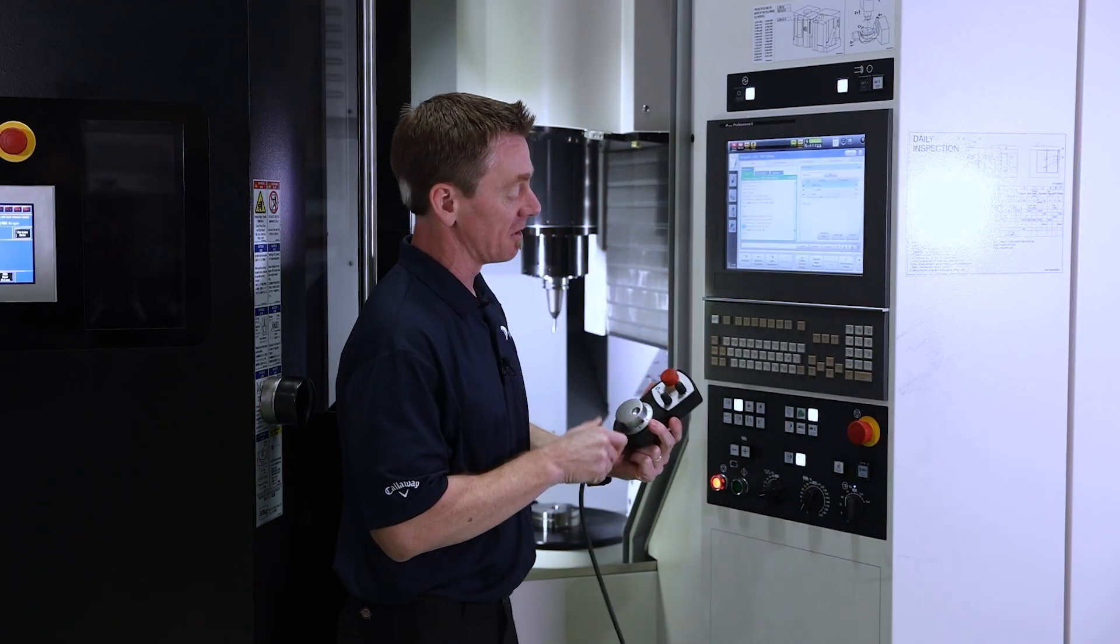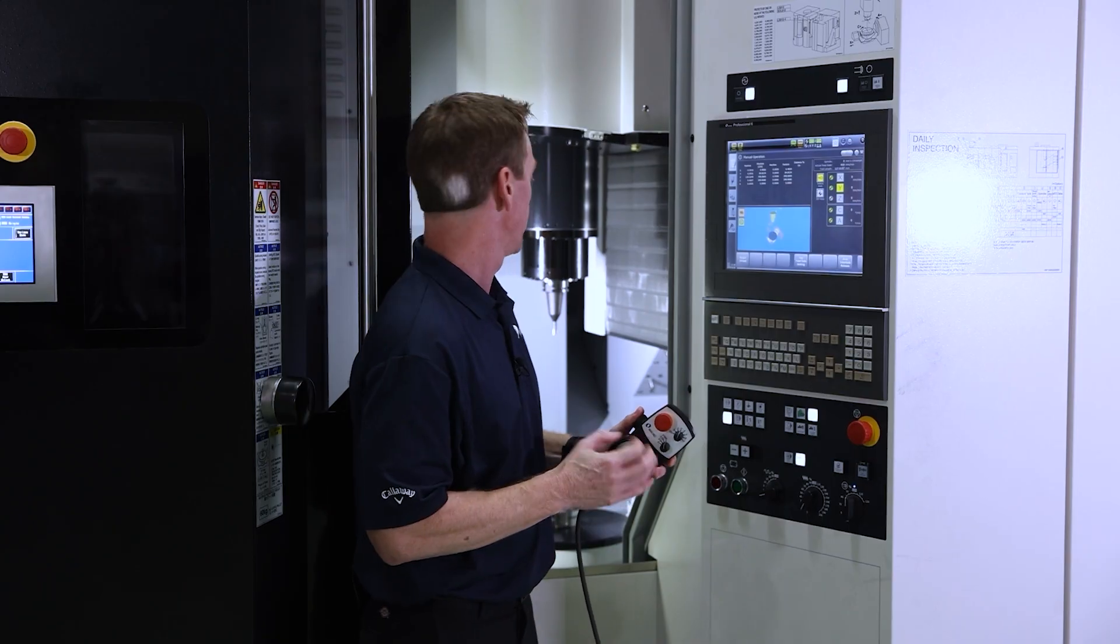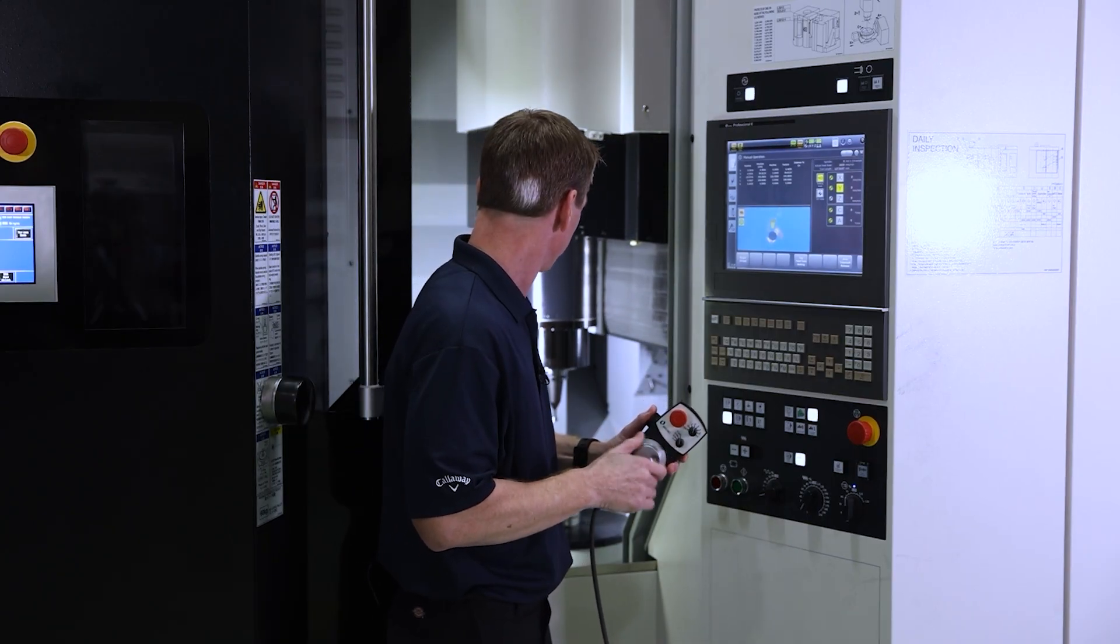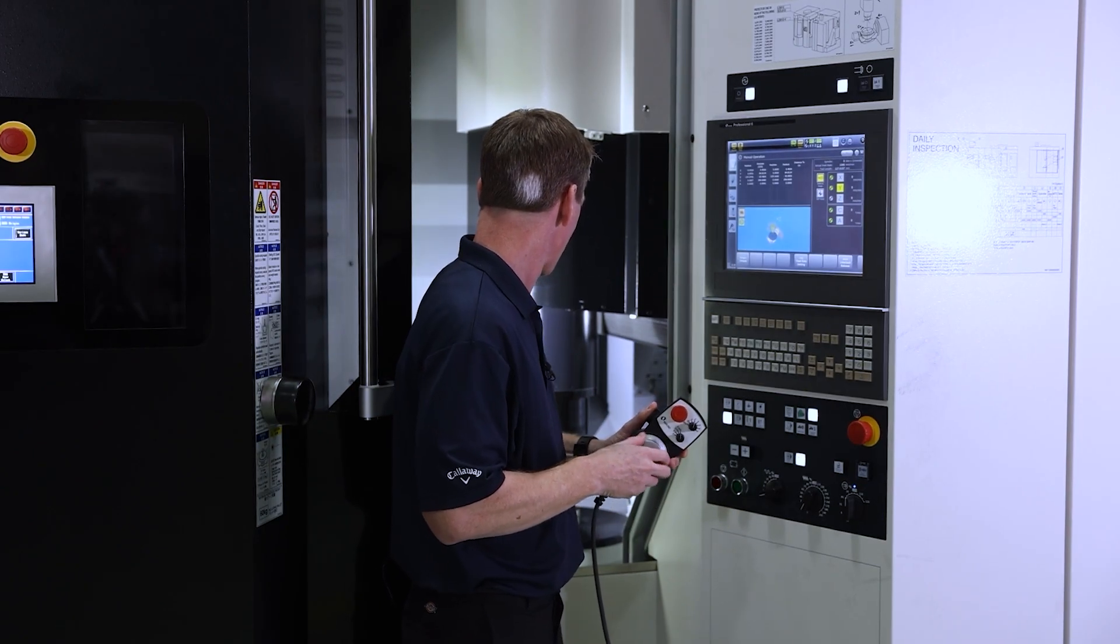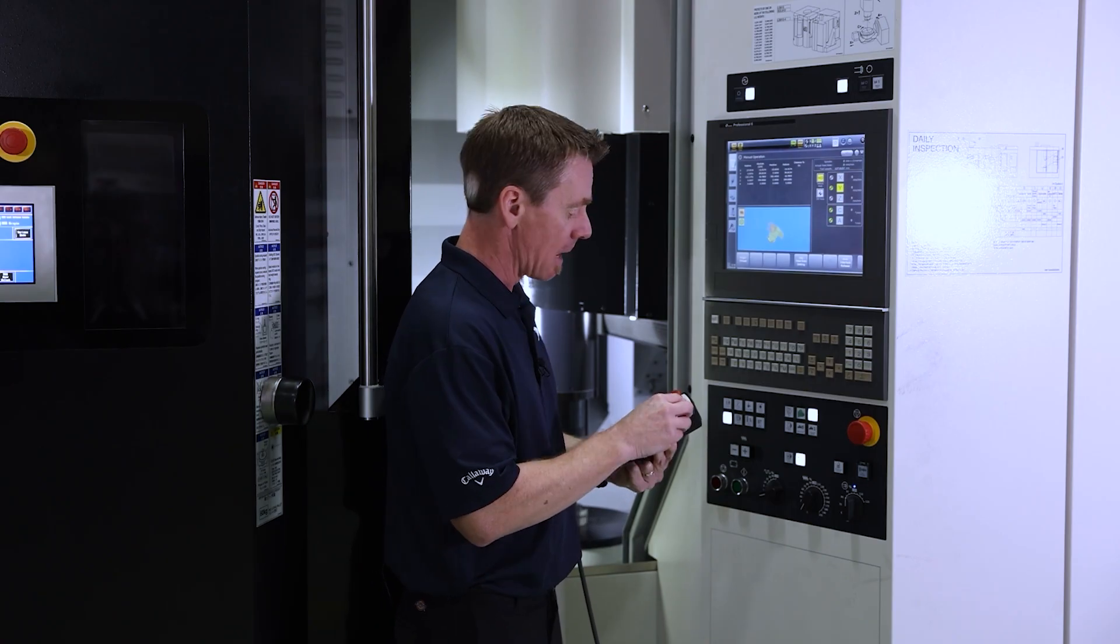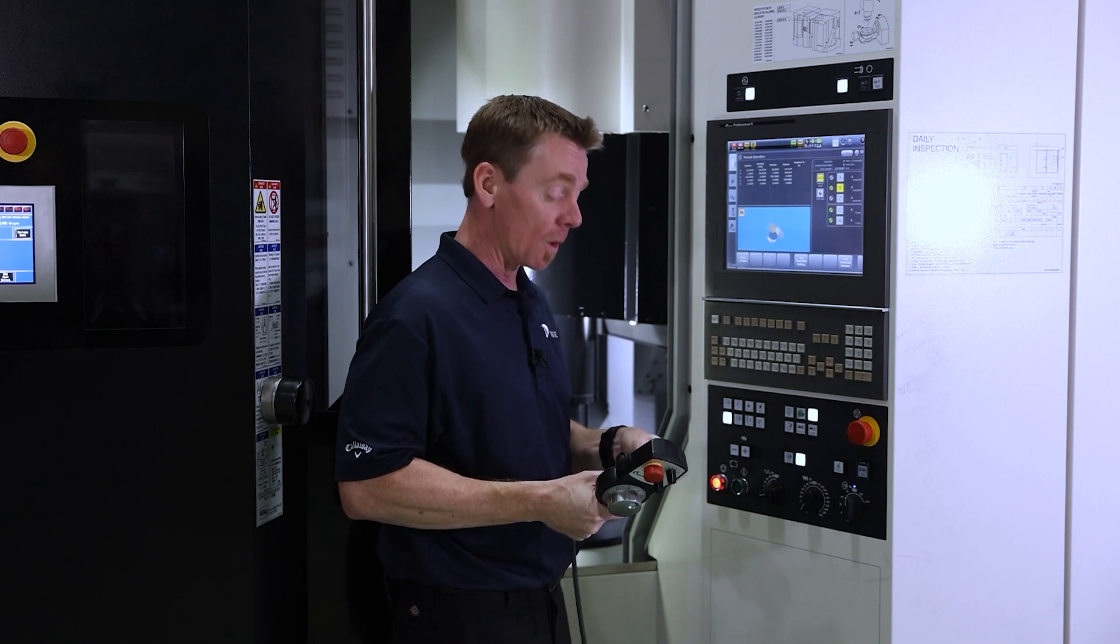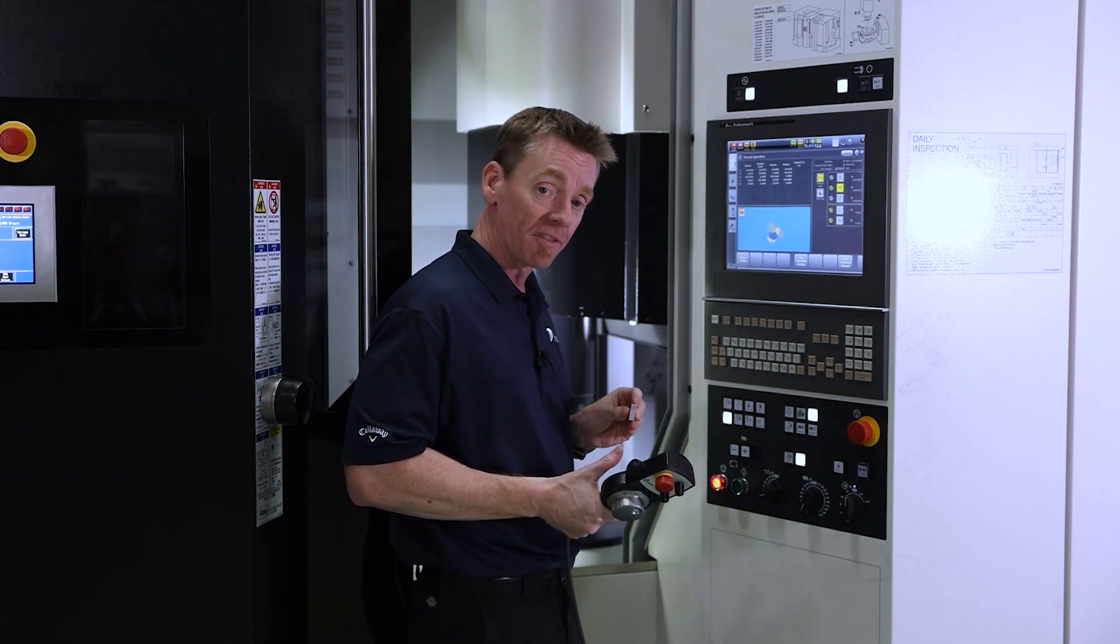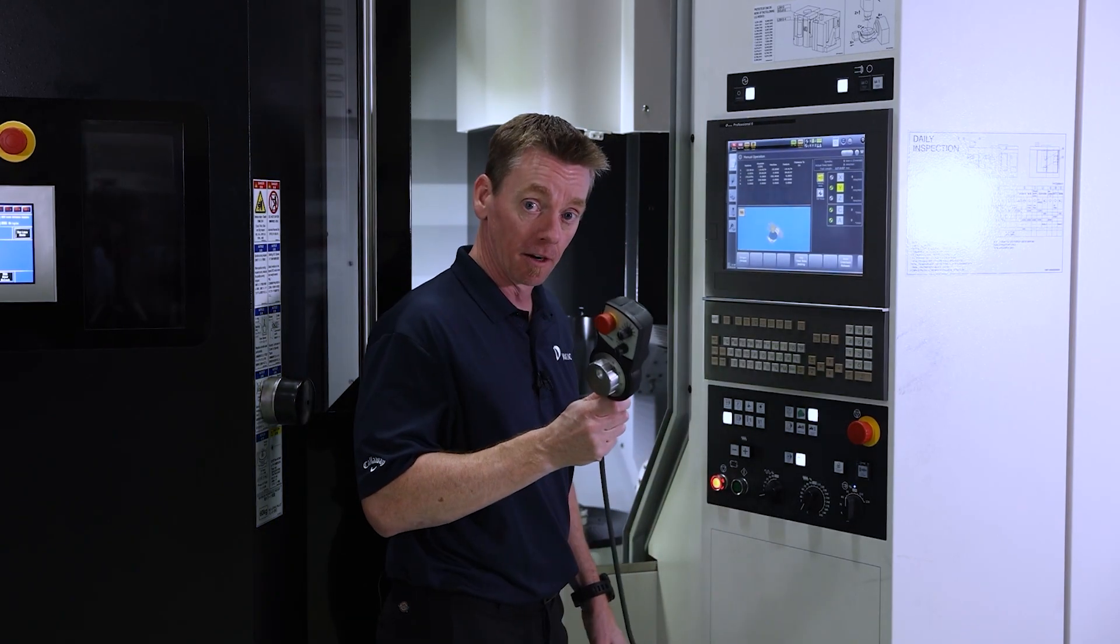So first things first, we make sure the machine is referenced. We're going to go into manual mode here. We're going to use this to identify our Z surface. And we want to make sure what we do is we're doing this as we're going away. So we're going to try to slip this block in as we're moving the master tool away from the surface. So if we look, we got plenty of room. Now, a little trick here.